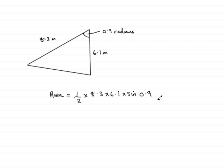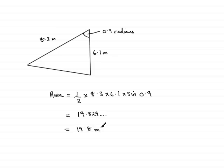Make sure that your calculator is now converted to radians mode, and that you know how to do that. If we work this out, you should find you get 19.829 and so on. If we round this to one decimal place, and we're working in metres, so the area would be 19.8 square metres to one decimal place. Given two sides and an included angle, we should be able to find the area of a triangle.